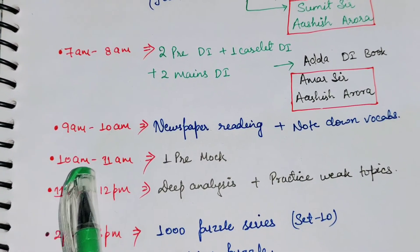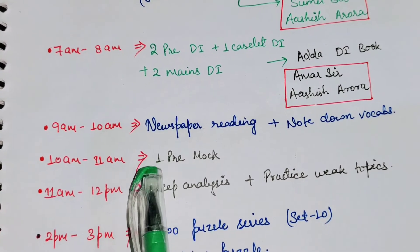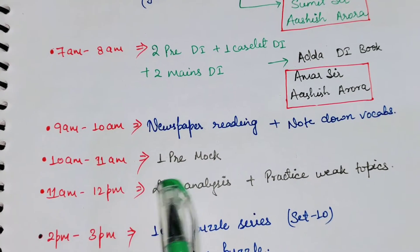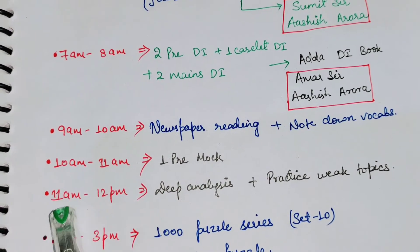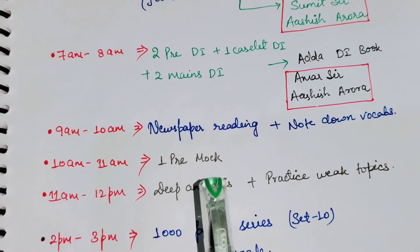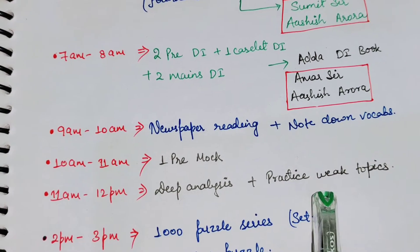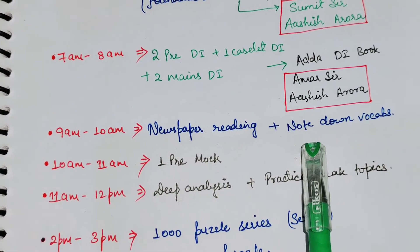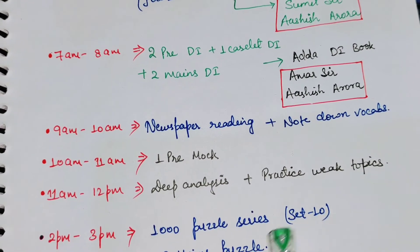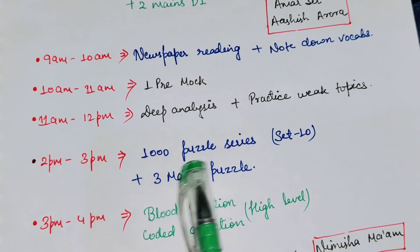From 10 AM to 11 AM, you will have to take one prelims mock. Since we are doing mocks on alternate days, today we have to take one mock. Then from 11 AM to 12 PM, you have to do a thorough mock analysis — review the questions you got wrong or topics you haven't solved, and practice those.